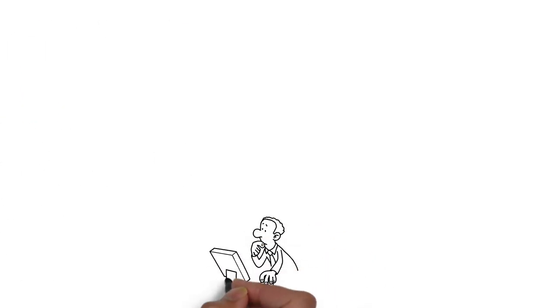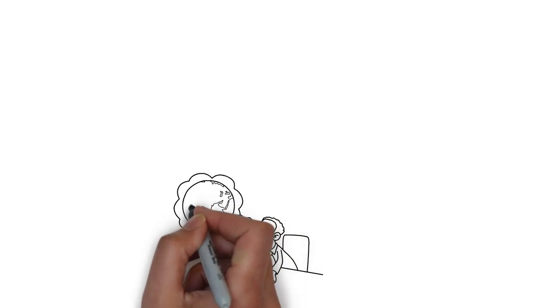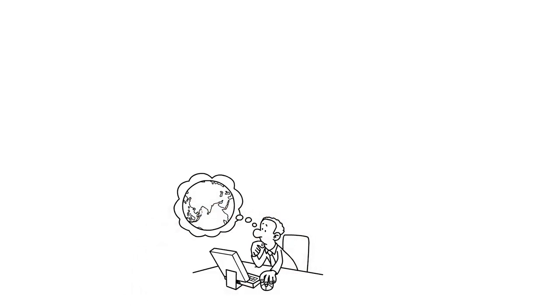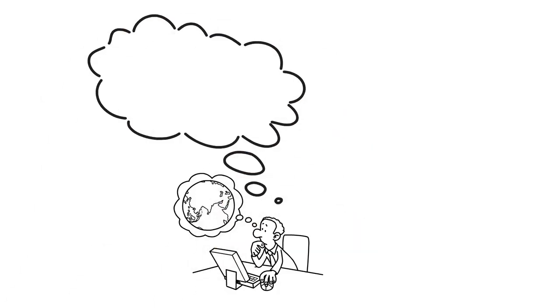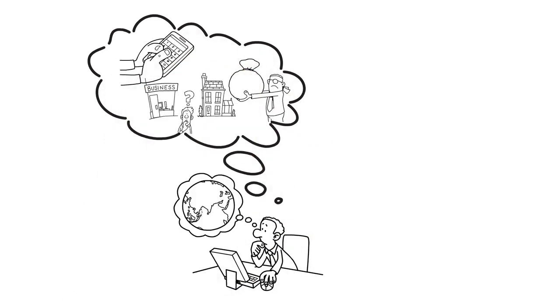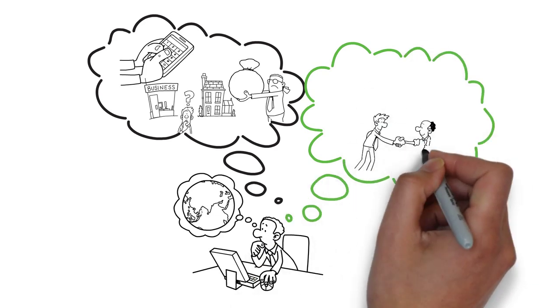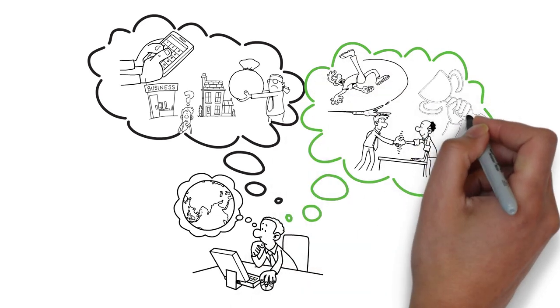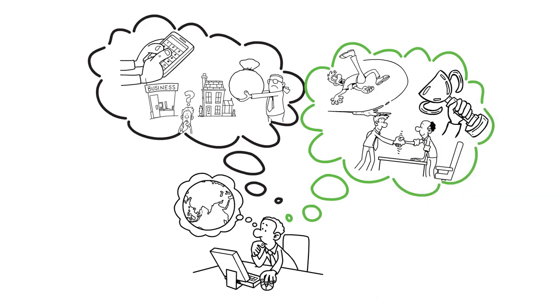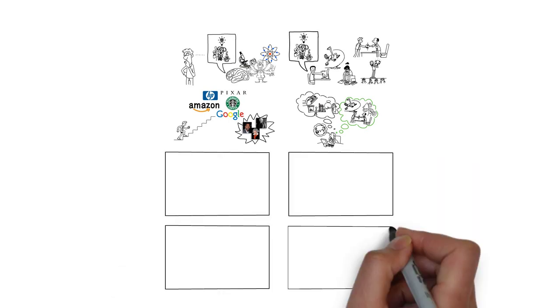Rather than believing that we have to start with a big idea or plan a whole project out in advance, what we need to do is make a series of little bets about what might be a good direction and learn critical information from these little bets and experiments and failures and wins as we go along, figure it out along the way. Let me share with you four great success stories and how they emerged from little bets.